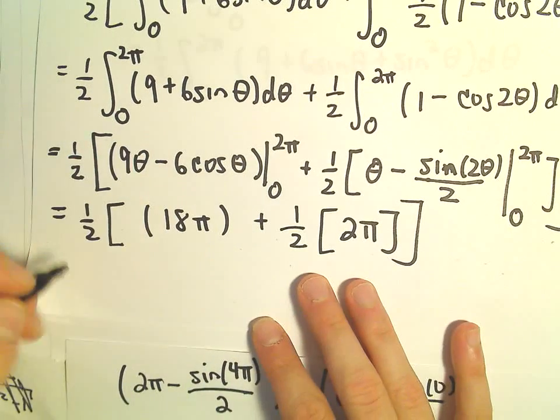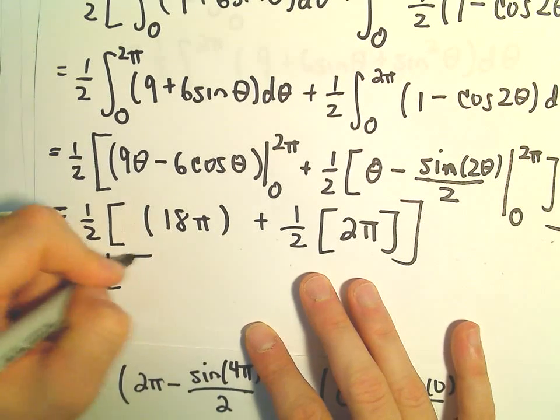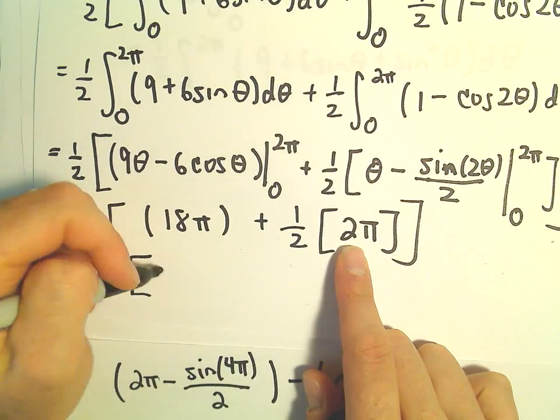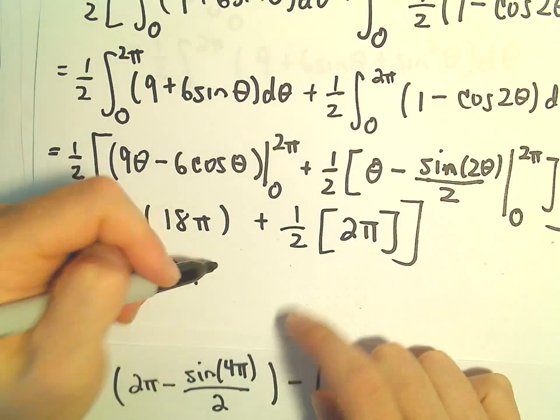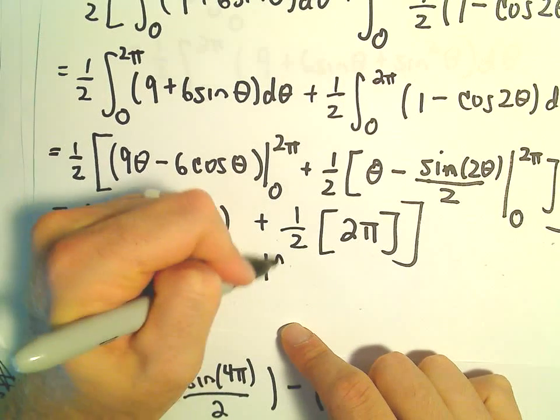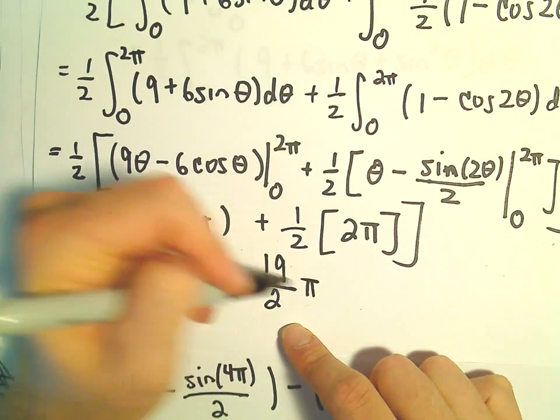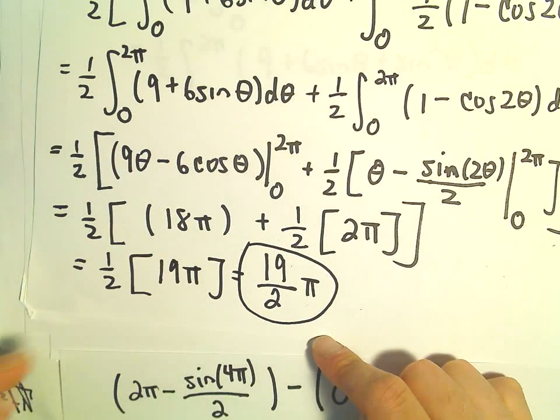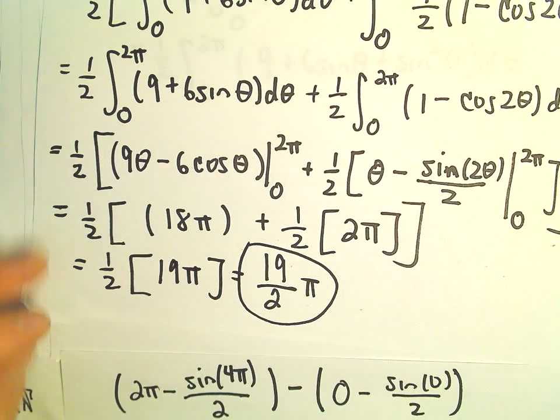And now if we keep simplifying, we've got 1 half, we have 18 pi plus another pi, that's going to be 19 pi. So it looks like we get 19 over 2 times pi as the area, as being the area that's enclosed.